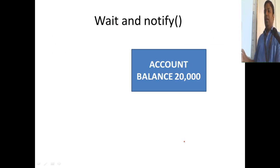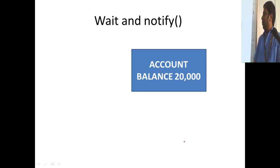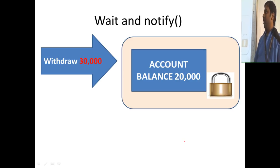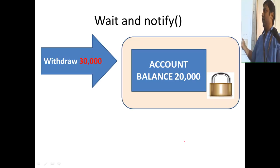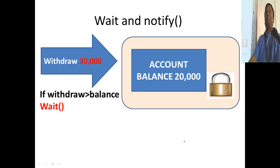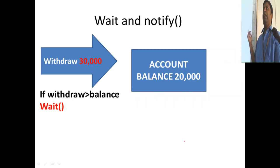Let's walk through an animation. Here is an account object with balance 20,000. A thread wants to withdraw 30,000. The first step is to lock the object. Once it locks, it enters the synchronized method and tries to perform the withdrawal. It checks: is withdrawal amount greater than balance? Withdrawal is 30,000, balance is 20,000, so it calls wait() and goes into the passive state. When wait() is called, the lock is released.